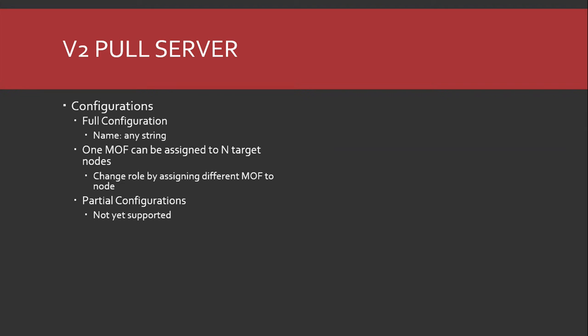Partial configurations — there is not support in V2 for partial configurations yet, that's still being worked on. When the change was made there wasn't time to implement partial config support. The intent is that you'll be able to say this node gets these configurations, and when the target node asks, the pull server lists them and the node just fetches and applies them, rather than mucking around with the meta config.